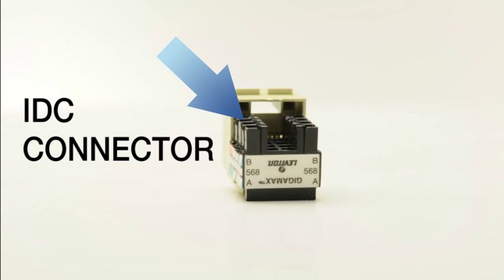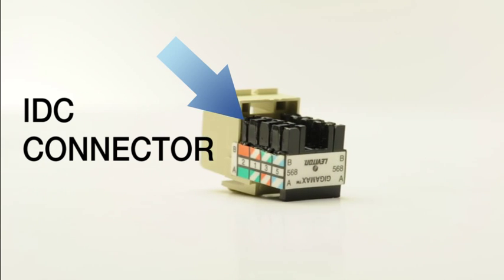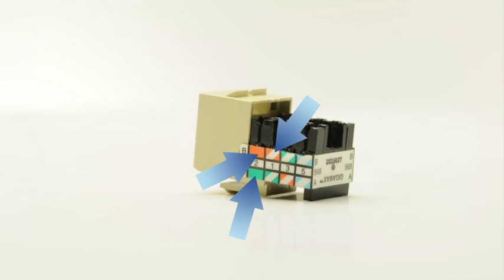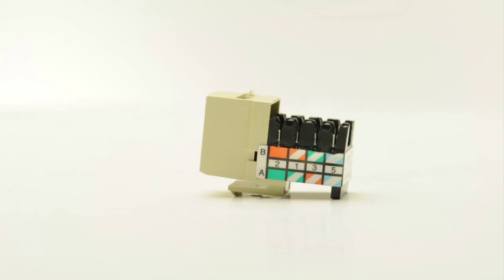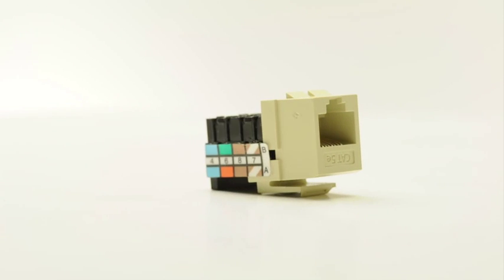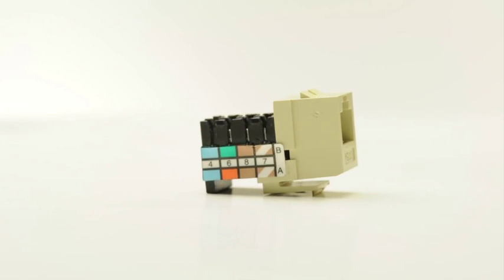You'll notice each conductor has a color: orange, orange white, green, green white, etc. Match the colored conductors to the color code and place them in the appropriate IDC slot.